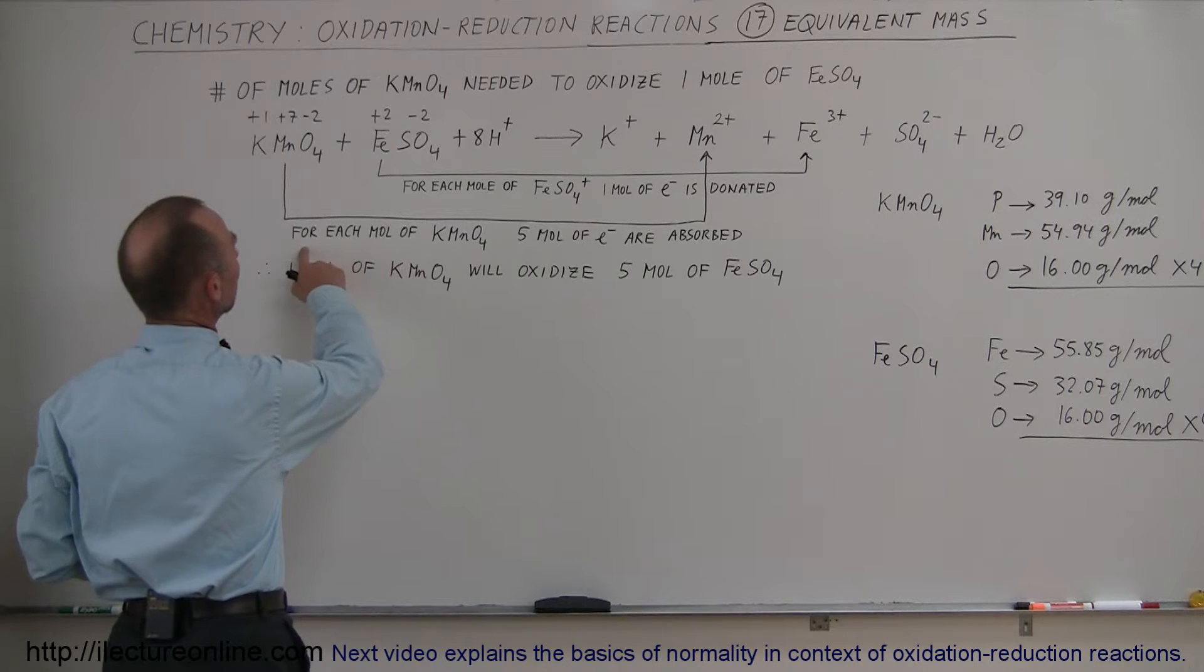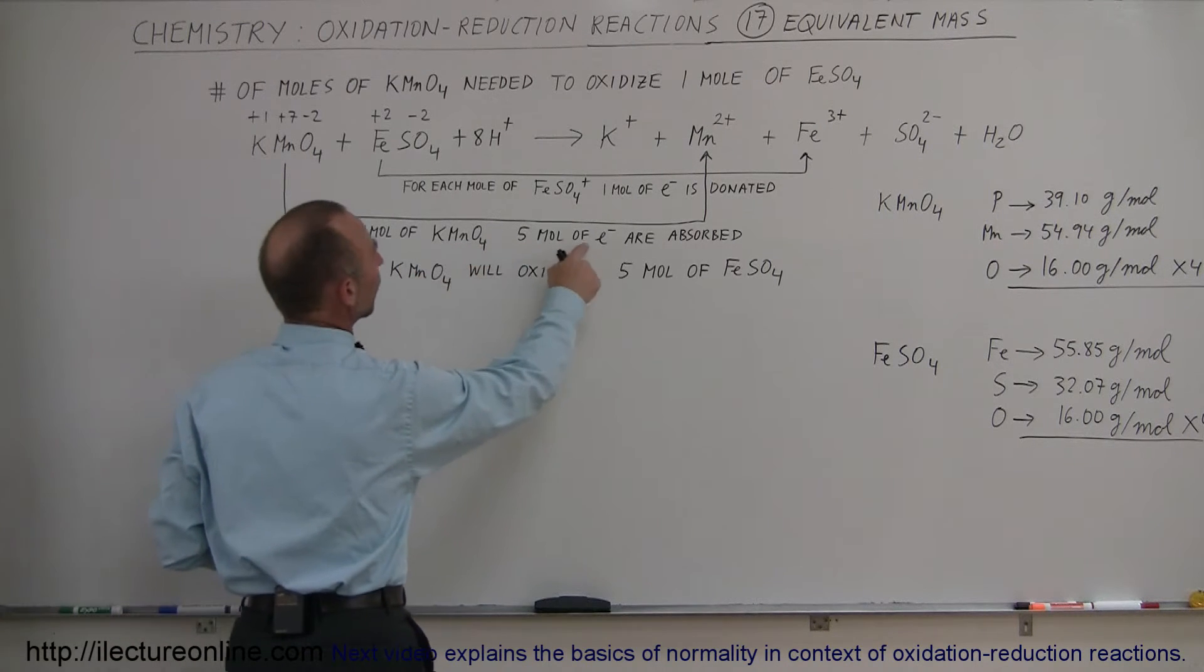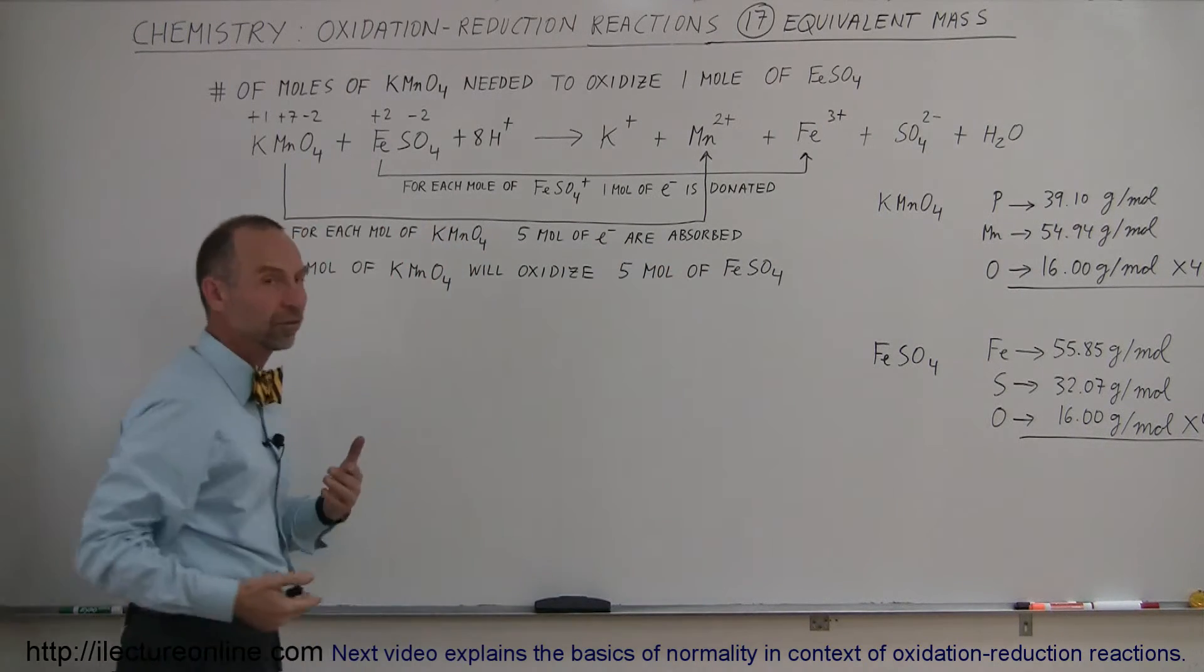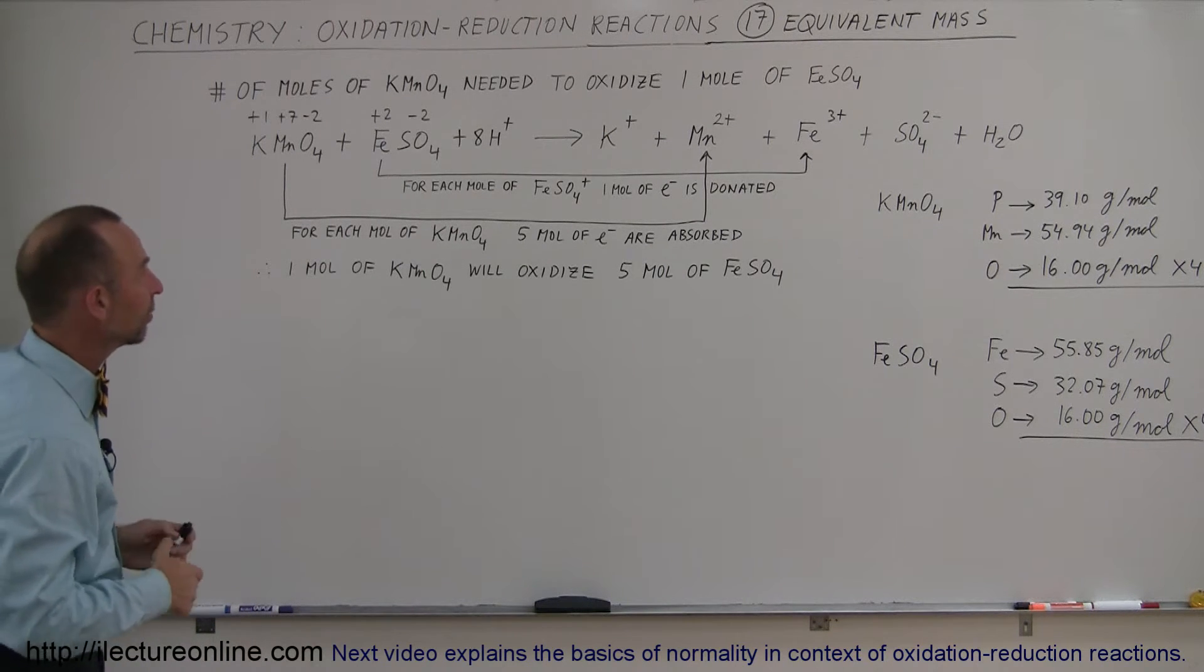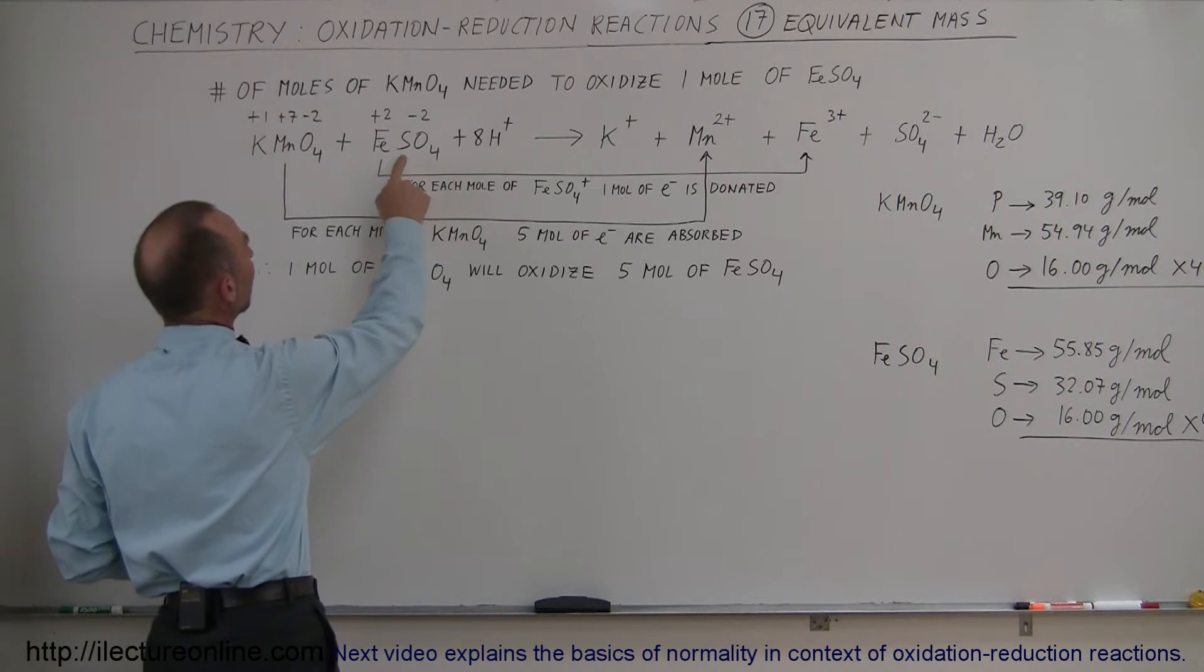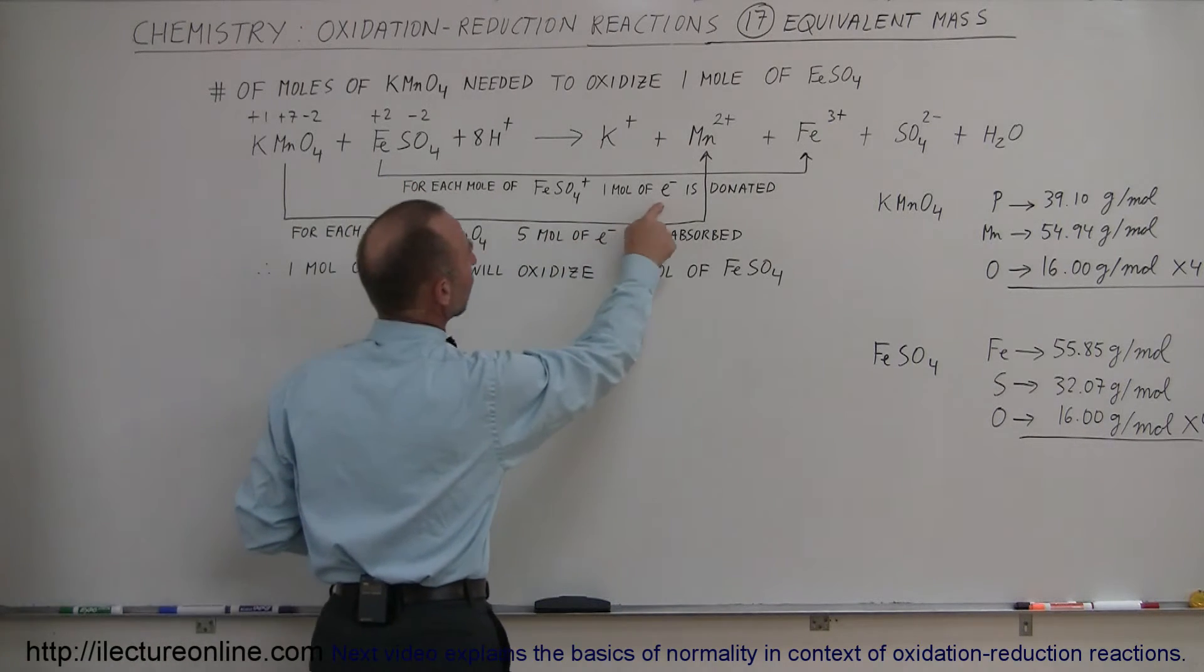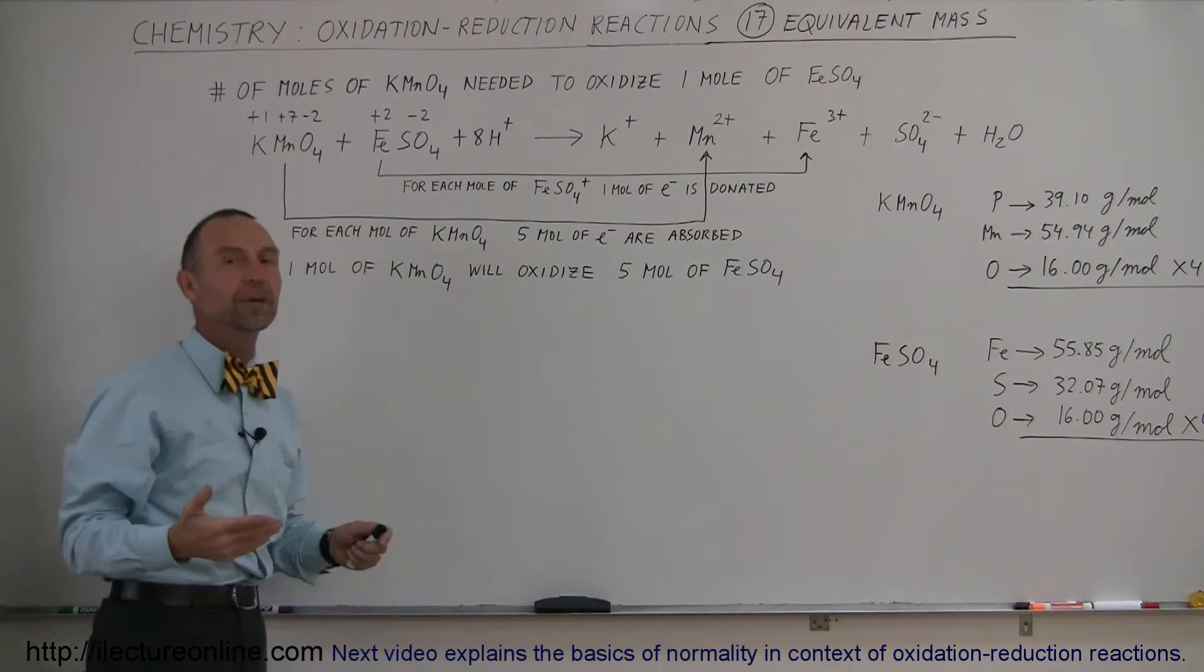That means that for each one mole of potassium permanganate, five moles of electrons are absorbed because that's the oxidizer, so it's accepting those electrons. Then for each mole of iron sulfate, one mole of electrons is donated because the iron is being oxidized.